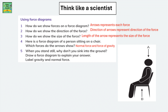Which forces do the arrows represent? Normal force and gravity. Normal force because the person, which is an object, is in contact with another object — the chair — and both are at rest; normal force works in this condition as a support force. Gravity because the person and the chair are being pulled or attracted towards the ground. When you stand still, why don't you sink into the ground? Draw a force diagram to explain your answer and label the gravity and normal force.